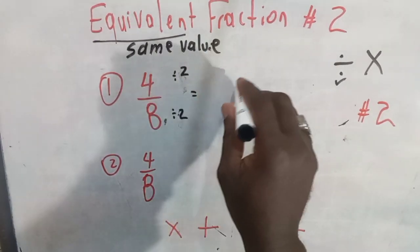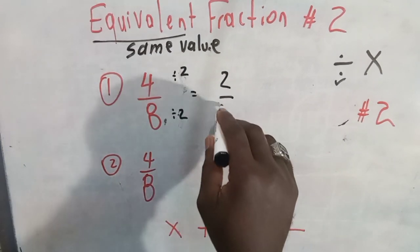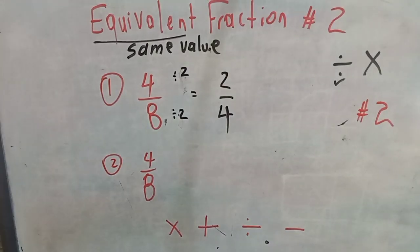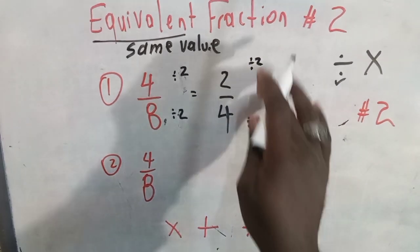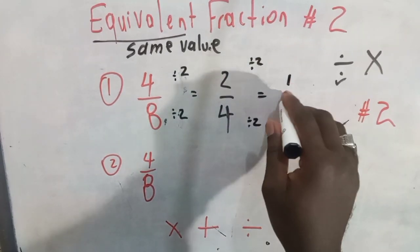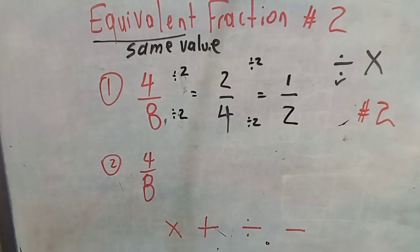So two into four is two. Two into eight is four. We can also divide by two again. Two into two is one. Two into four is two. That's the lowest we can go.